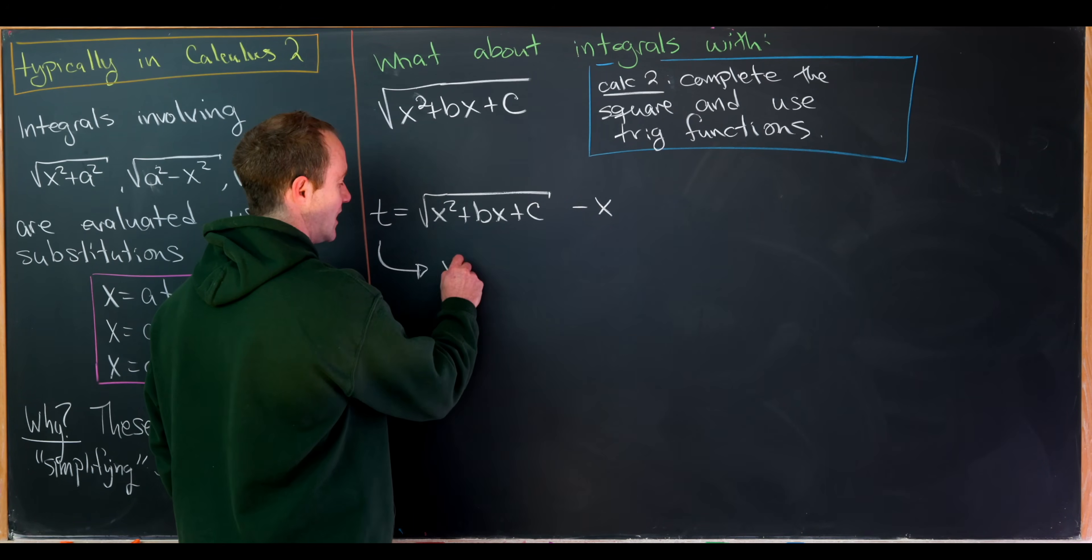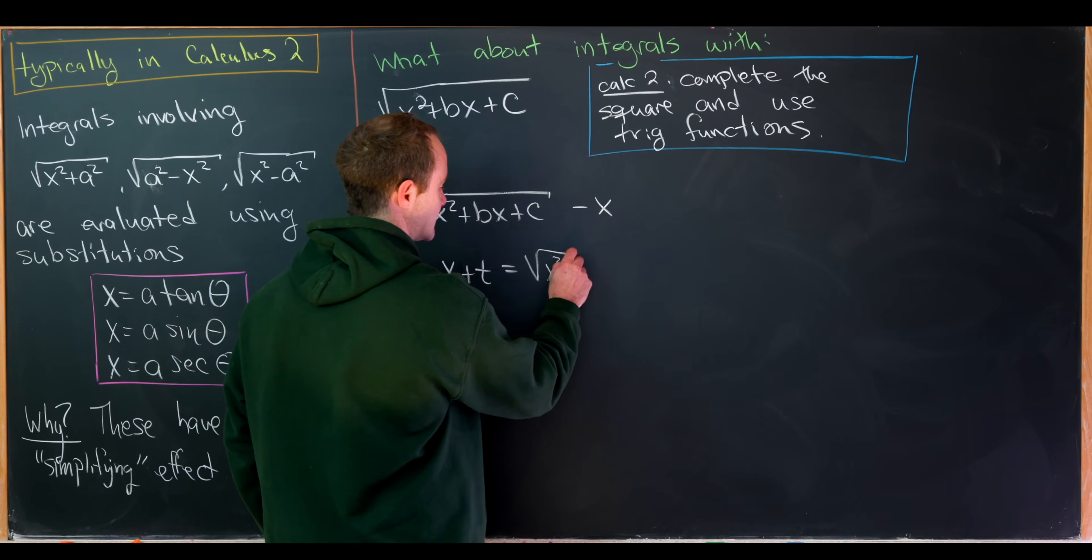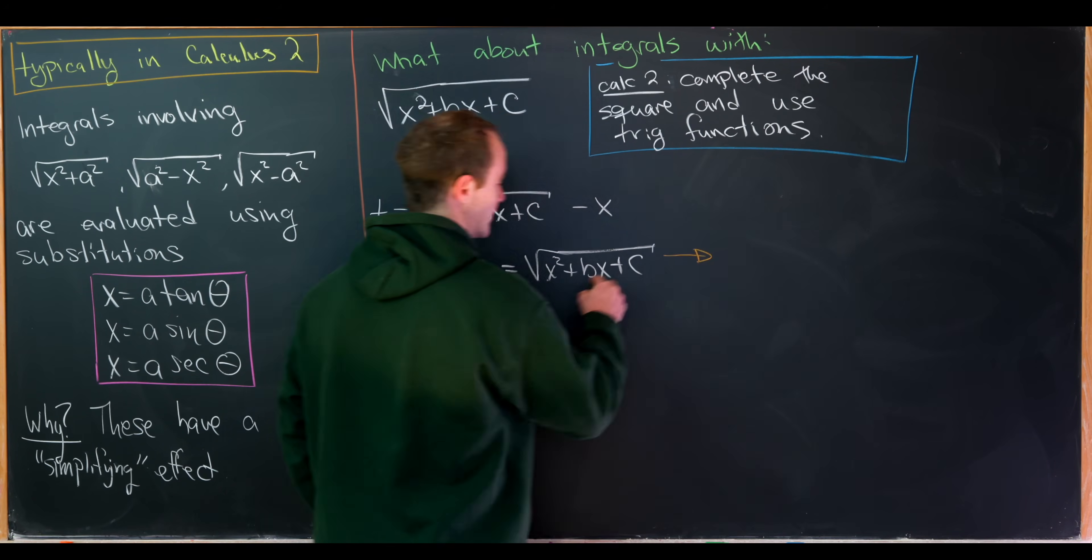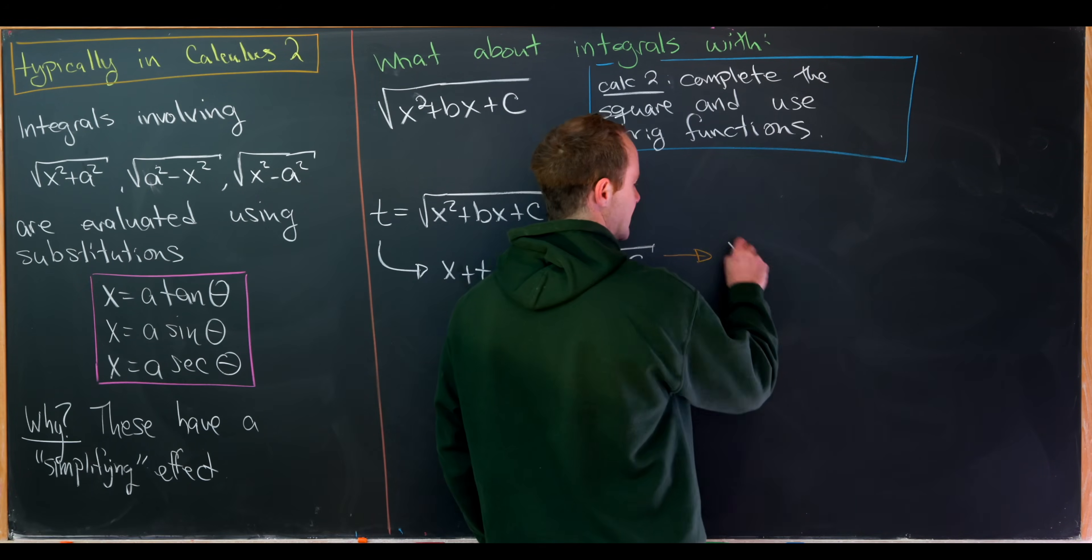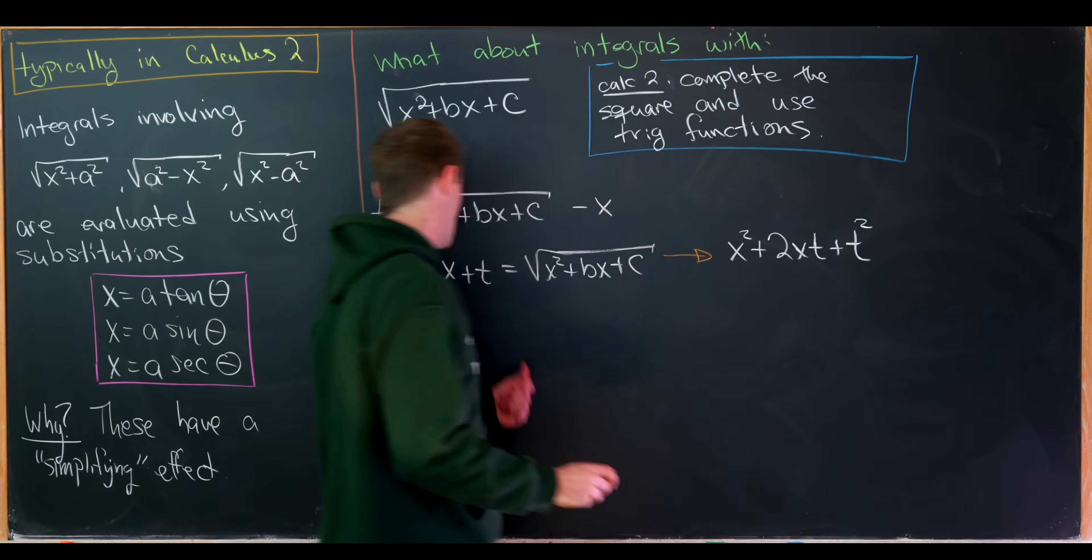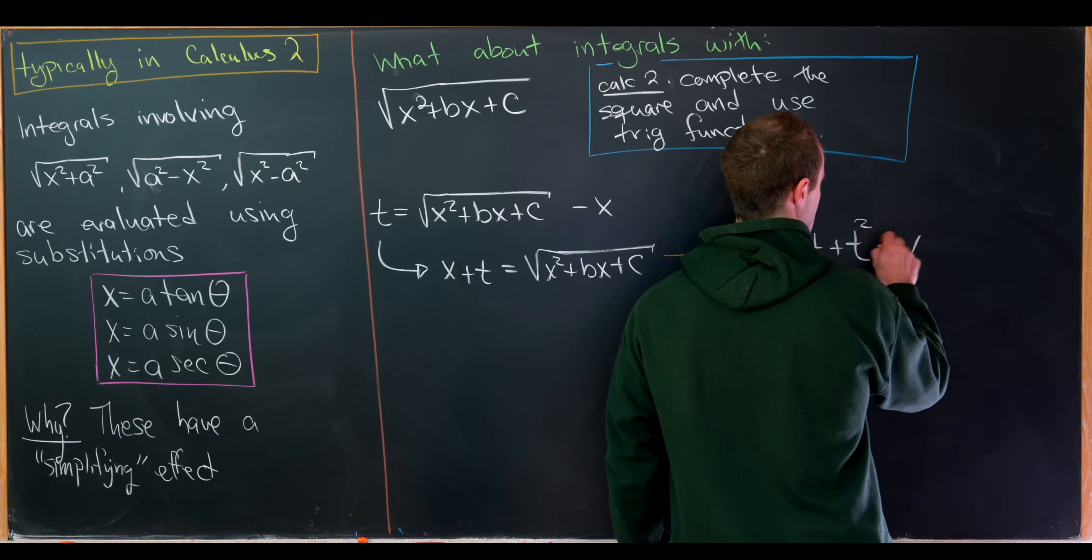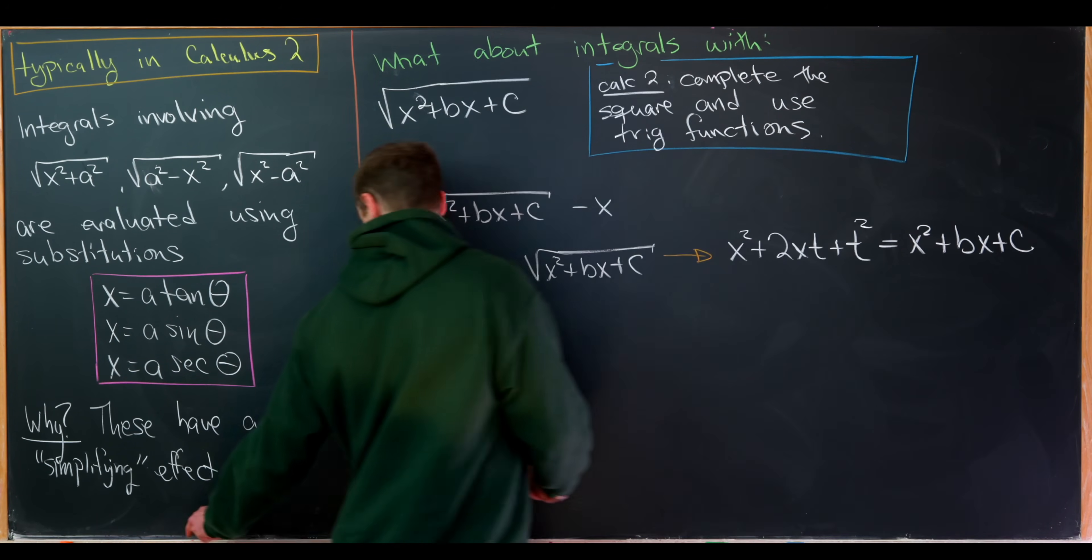Notice this means that x plus t is equal to the square root of x squared plus bx plus c. And now we can easily square both sides in order to get rid of this square root on the right-hand side. That'll give us x squared plus 2xt plus t squared over here on the left-hand side. I multiplied that out. And then on the right-hand side, the square and the square root will cancel, giving us x squared plus bx plus c.